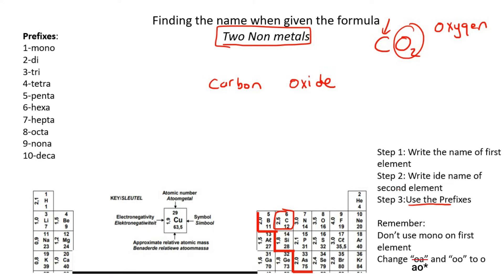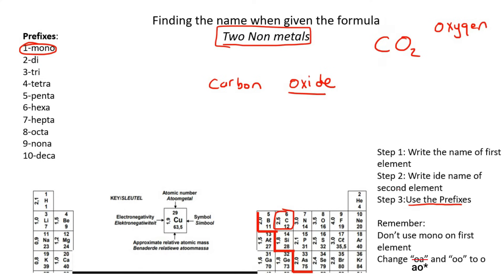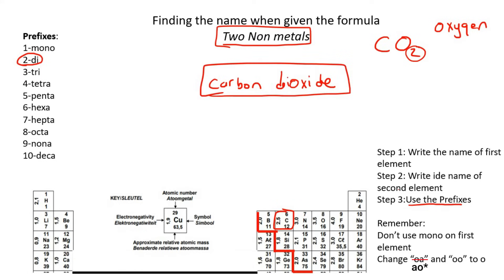Then we use the prefixes. How many carbons are there? There is one carbon, so you would put mono in the front. However, there is a rule: don't use mono on the first element. Then we go to the second one — how many oxygens were there? There were two, so we go to two on the table and that says di. So you add the word di in the front, and so this is carbon dioxide.